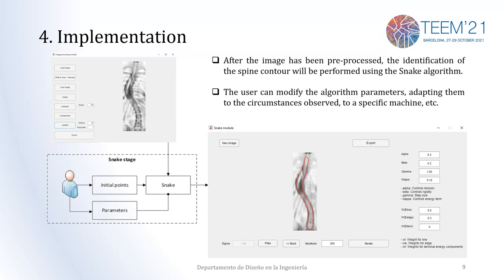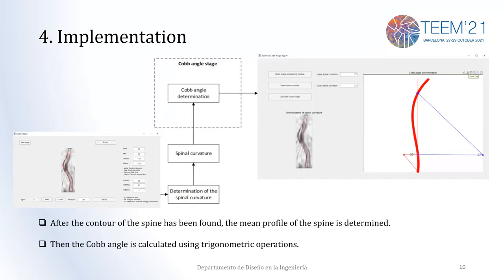After the snake is used, the contour is achieved. This contour will be used to determine the spinal curvature, and over that spinal curvature we will apply several trigonometric functions in order to determine the degrees, as can be seen in the image.